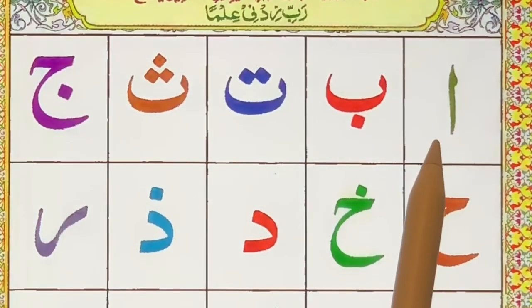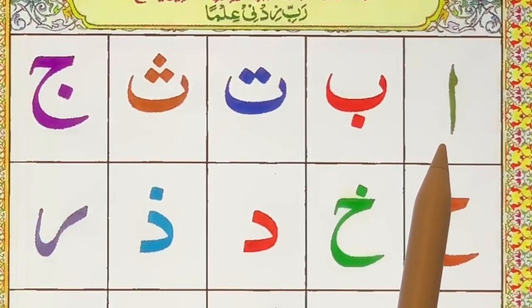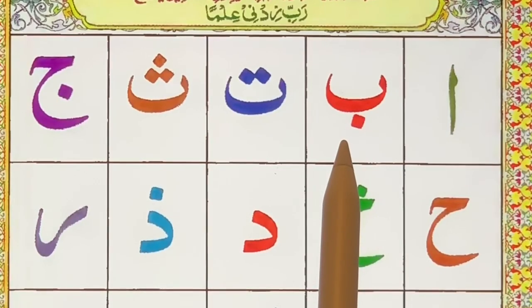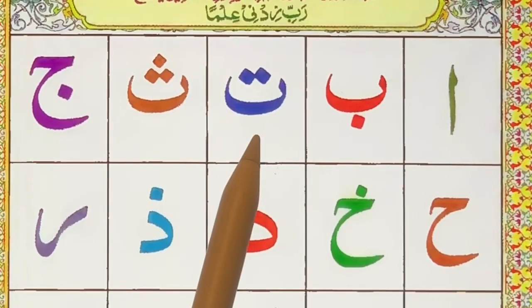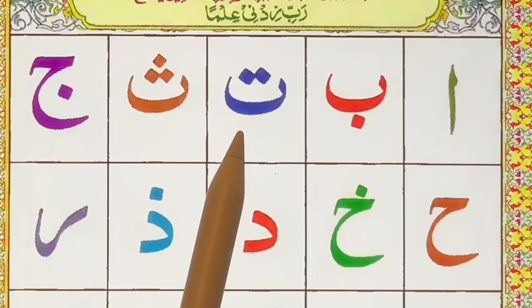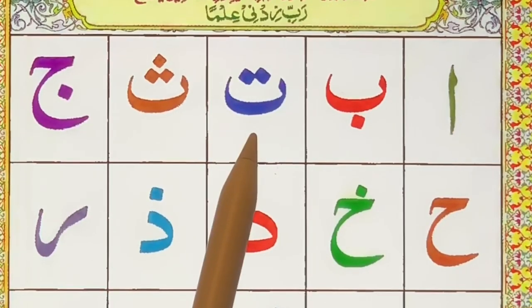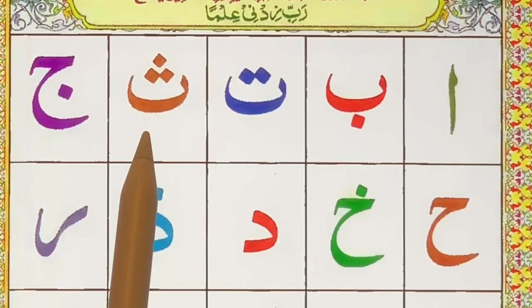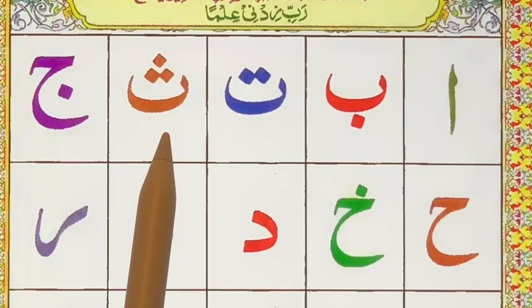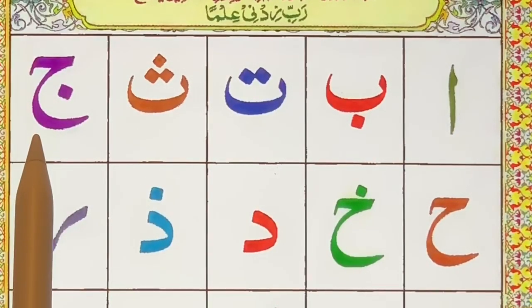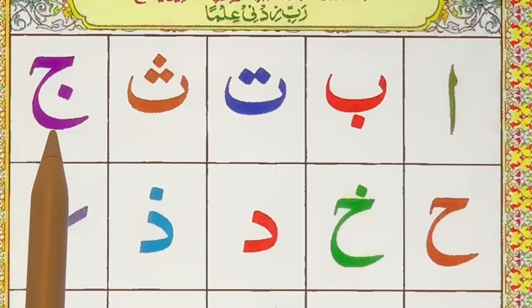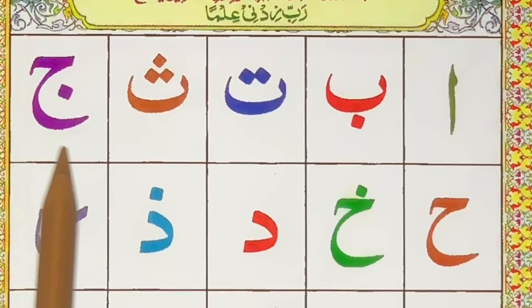Alif, alif. Ba, ba. Ta, ta. Tha, tha. Jim, jim.